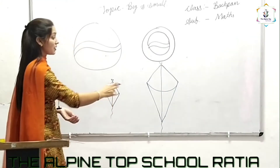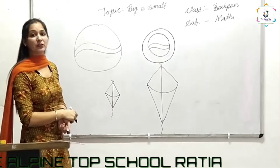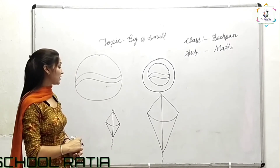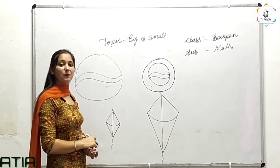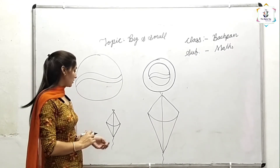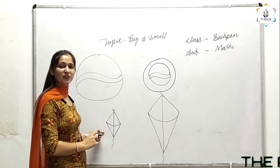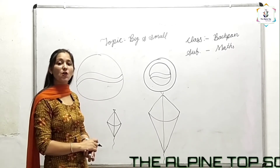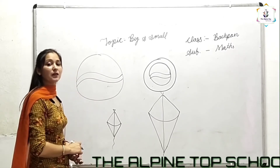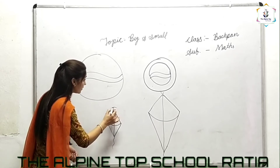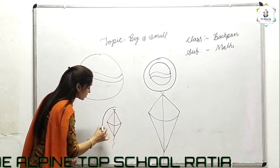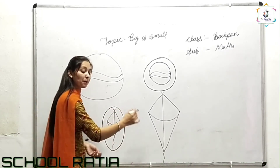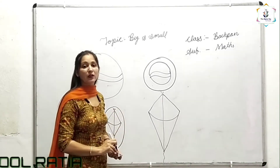This is the kite. Tell me which kite is big and which kite is small. Is this the big kite? No, this is the small kite. Circle the small kite. This is the big kite.